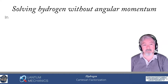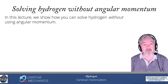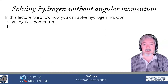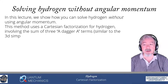We're going to be solving hydrogen without angular momentum. It almost seems like an odd thing to do — I have a central force problem and angular momentum is conserved, so why solve it without using angular momentum? Well, this allows us to work in the Cartesian basis, and it also brings up some interesting things that happen when we do factorization for a more complicated system.